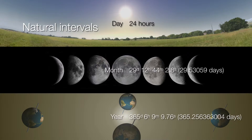So an ideal calendar would be able to bring all three of these natural cycles into a perfect synchronization. But if you look at the values of these cycles, you quickly realize that they don't divide evenly into one another.